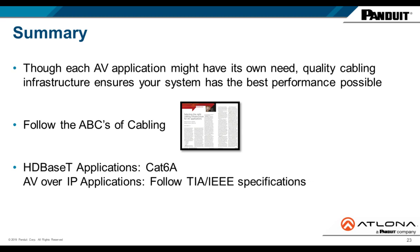Question on HDMI distance limitations: what is the distance limitation for passive HDMI cables for 1080p and 4K? For 4K transmission over a passive HDMI cable, the maximum distance is 12 to 15 feet. For 1080p signals, it extends to approximately 24 to 25 feet.